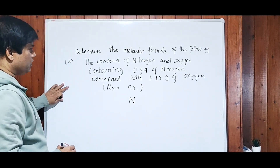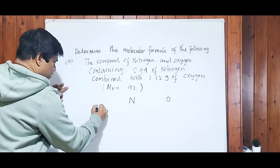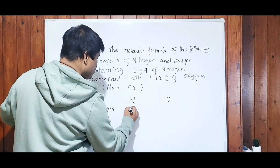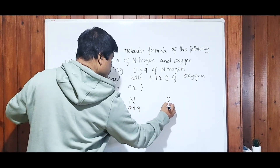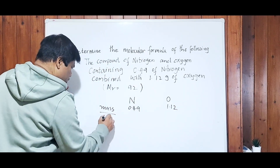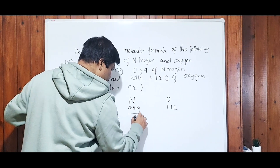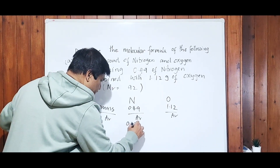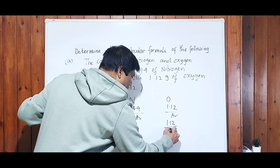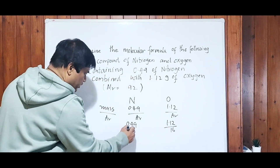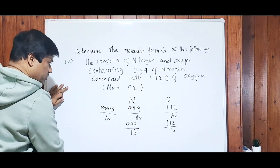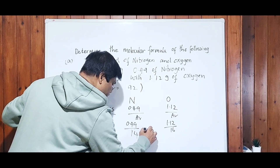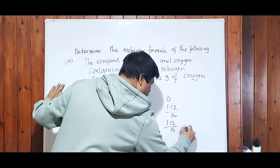Write down the elements present: nitrogen and oxygen. Take down their masses — nitrogen mass is 0.49 and oxygen mass is 1.12. Divide by their Ar values to find the moles. Nitrogen Ar is 14: 0.49 ÷ 14. Oxygen Ar is 16: 1.12 ÷ 16. Using the calculator: nitrogen gives 0.035 and oxygen gives 0.07.